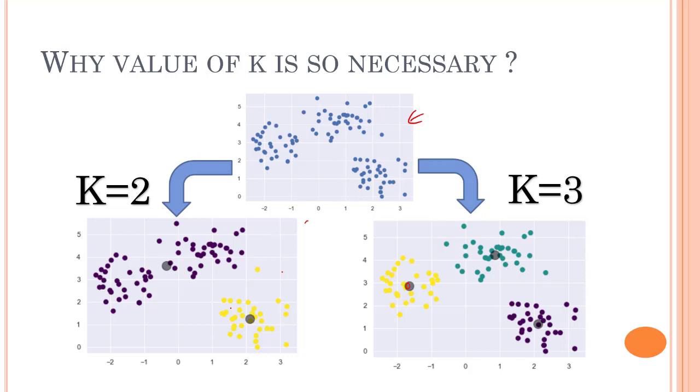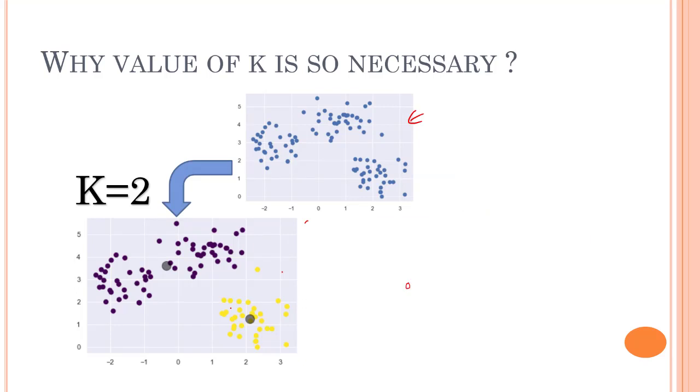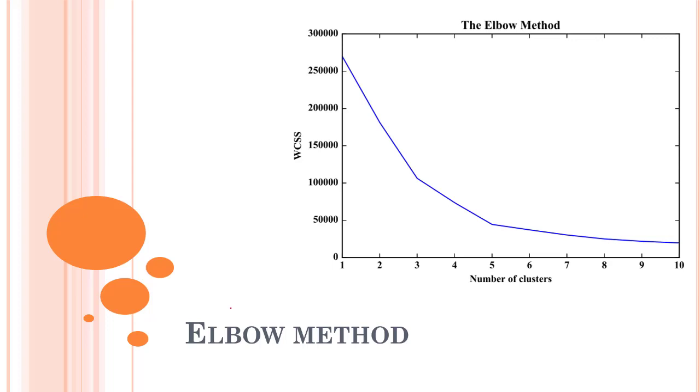So in that scenario, we have this elbow method. And even for two dimensional data, you can use this elbow method when your data is very concise. Let's actually see what we mean by the elbow method. It's one of the most popular ways to find the optimal value, that is the optimal number of clusters.